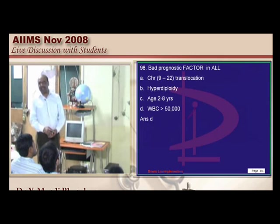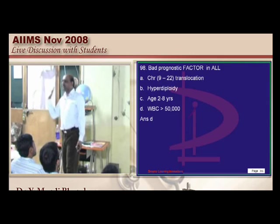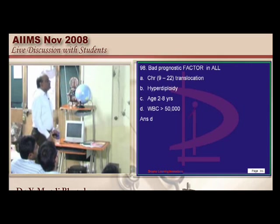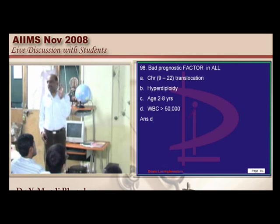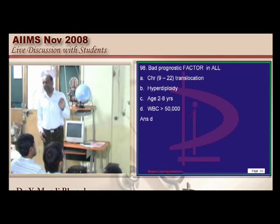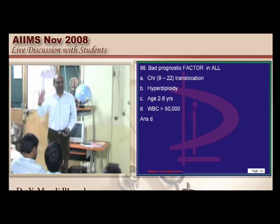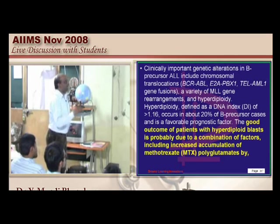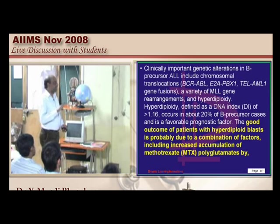What is the bad prognostic factor in ALL? Without a question on leukemia or lymphoma, there is no question paper. If there is a hyperdiploid blast, those malignancies will take up methotrexate very well, so they respond well to chemotherapy. The presence of hyperdiploidy is a good prognostic factor, not bad.